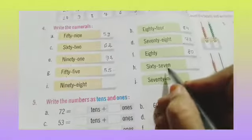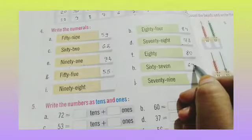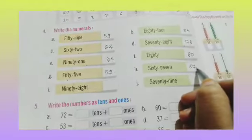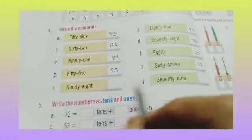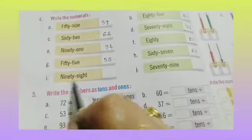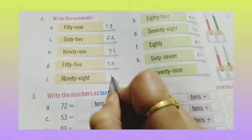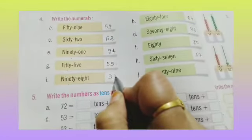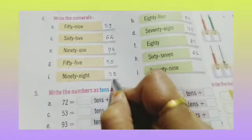67 — 6 at the tens place and 7 at the ones place, so 67. 98 — 9 at the tens place and 8 at the ones place, so 98.